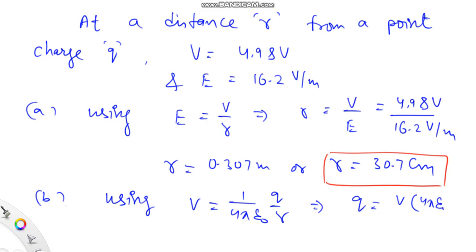Plugging in the values, q will be given by V = 4.98, r = 0.307, and 4πε₀ equals 1 upon 9 times 10 to the power 9. So this charge is calculated to be equal to 1.71 times 10 to the power minus 10 coulombs, the answer for the second part.